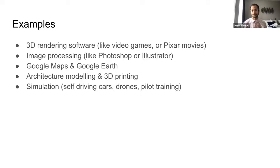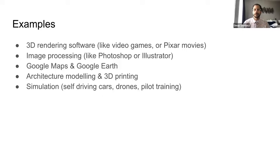Mapping software like Google Maps or Google Earth also makes heavy use of computer graphics, because you have a lot of mapping data you want to represent on screen efficiently and intuitively. Architects use CAD software — computer-aided design — which is one of the earliest things people have done with computers. Having a model on a computer lets you see it in 3D and see a lot of associated information.